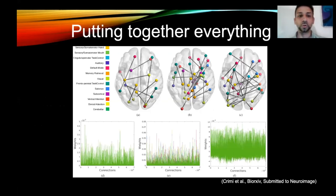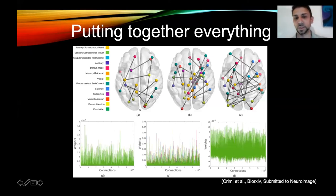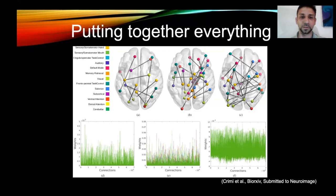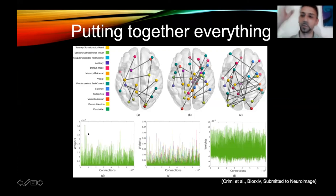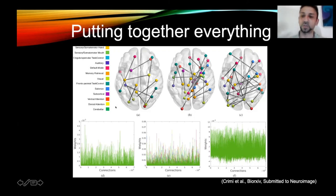Here I'm comparing two groups — I believe these were autistic children and typically developing children matched by age. You can see the structural connections that were different between them, and also the functional connectivity differences — which areas were co-activated differently. Functional activation doesn't necessarily follow the structural architecture of the brain, so the two types of differences don't overlap perfectly.